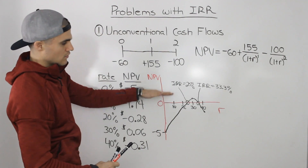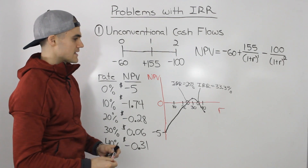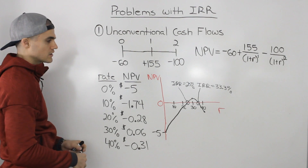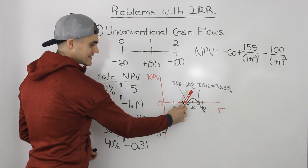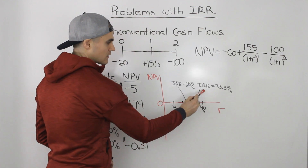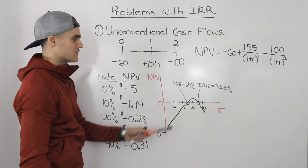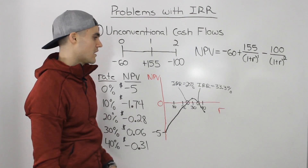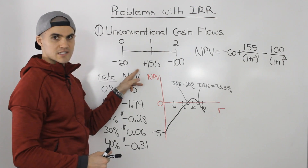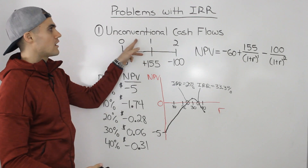This project only has a positive NPV between discount rates of 25% and 33%, which violates the rules we established in the overview video. We said that if the required rate of return is less than the IRR, the NPV will be greater than zero and we accept the project. But here, if the discount rate is less than 25% the NPV is negative, and it's also negative when the rate exceeds 33%. So unconventional cash flows can cause IRR to break down entirely.